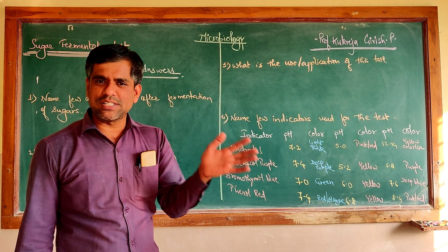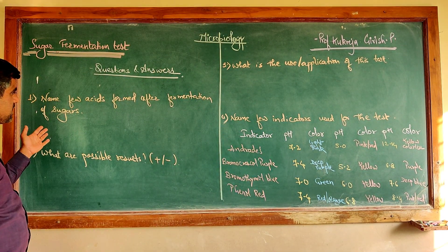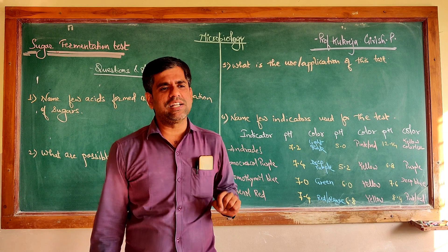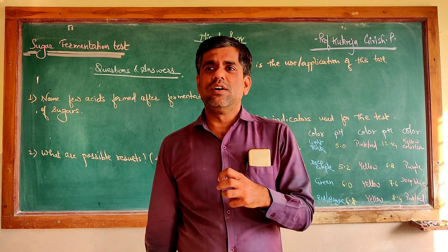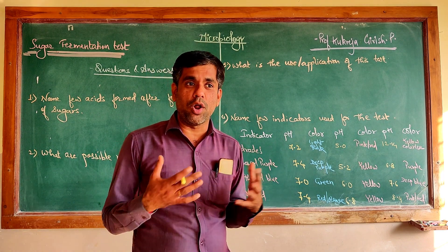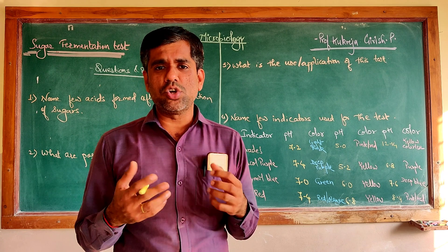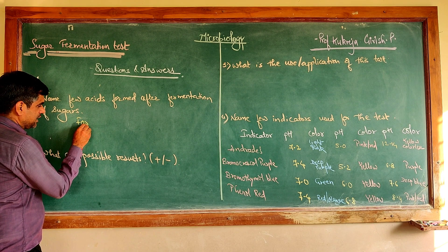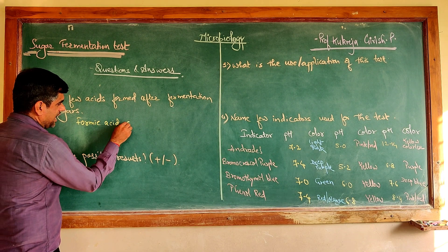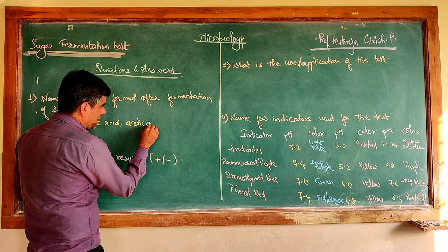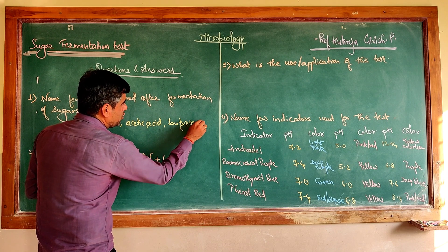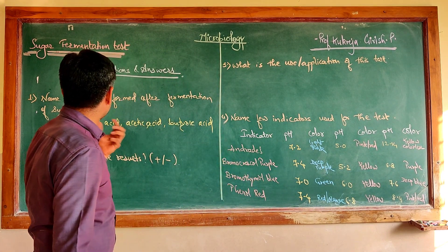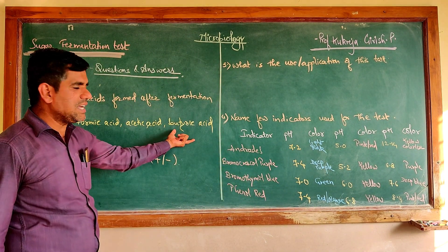Our first question: name a few acids which are formed during the fermentation of these sugars. In a typical carbohydrate or sugar fermentation test, the acids formed vary from organism to organism depending on the inherent pathways they follow. Some of the most common acids include formic acid, acetic acid, and butyric acid.